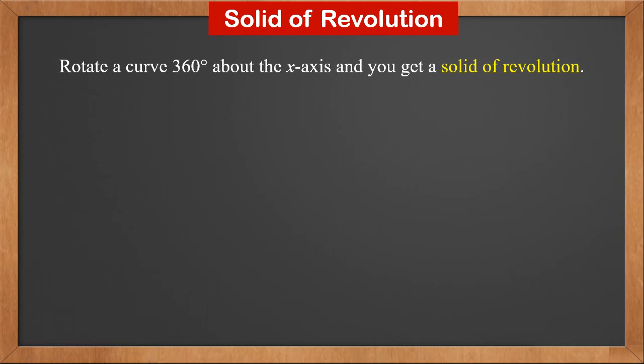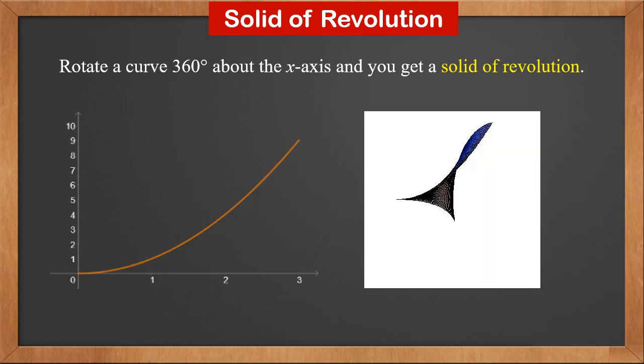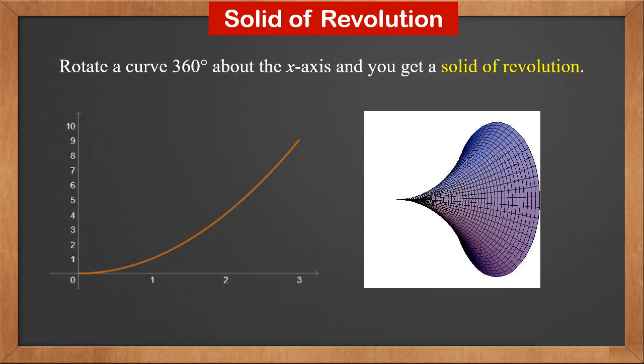Rotate a curve 360 degrees about the x-axis and you'll get a solid of revolution. This is the curve y equals x squared from 0 to 3. If you rotate it 360 degrees about the x-axis, it's going to form an enclosed shape. This shape is called a solid of revolution.